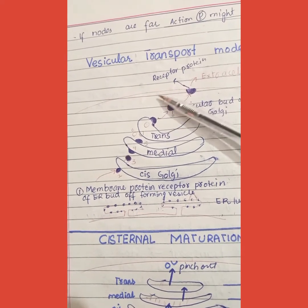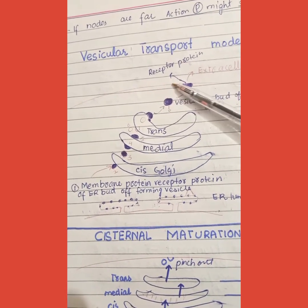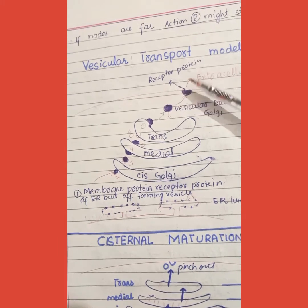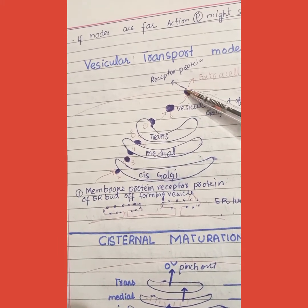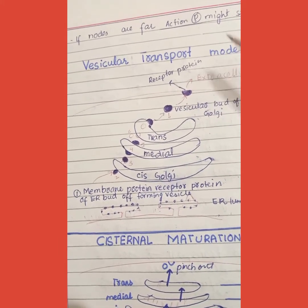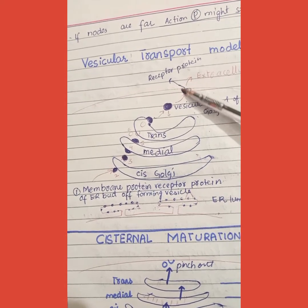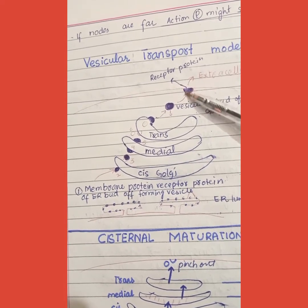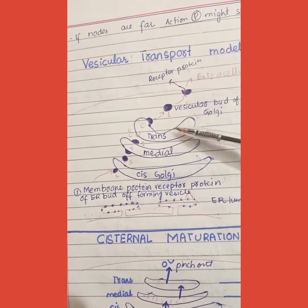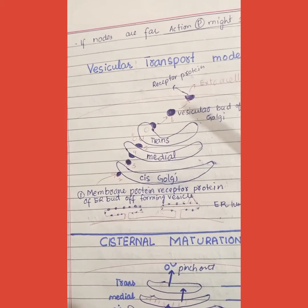Finally, it will be transferred to the plasma membrane. The protein part will face the extracellular phase, and the cytosol domain will be inside the cytosol and attached like this. This is what happens in the vesicular transport model.